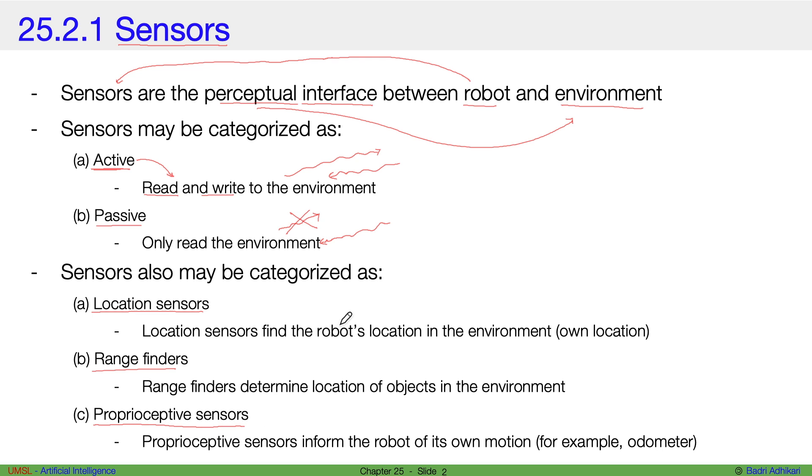Location sensors find the robot's location in the environment. That is, these sensors are designed to find out the location of the robot itself. Now range finders are the sensors that determine location in the environment.